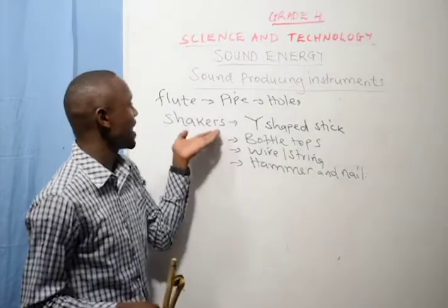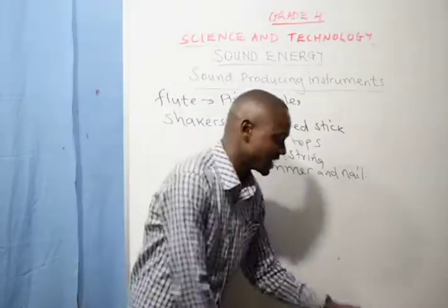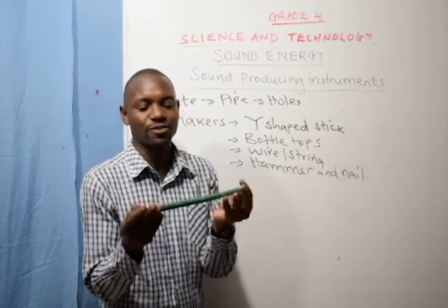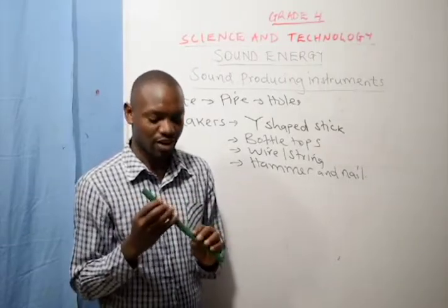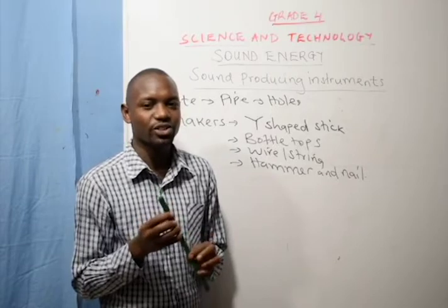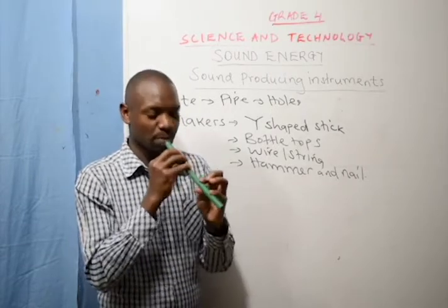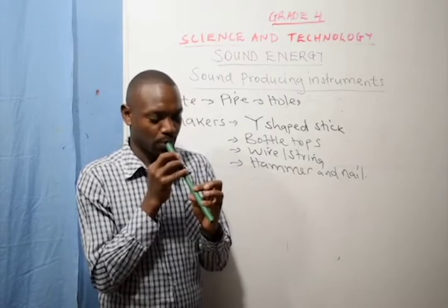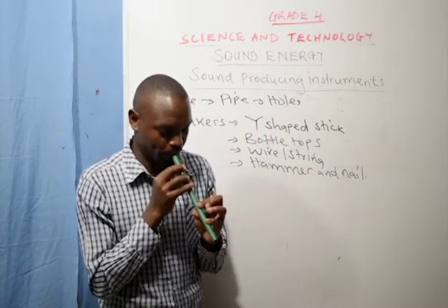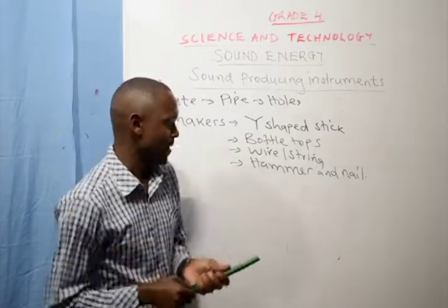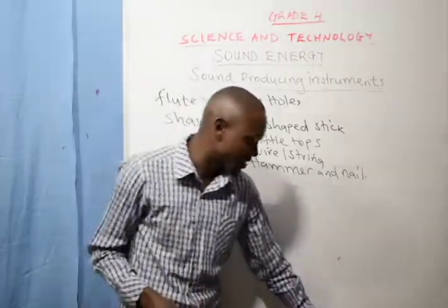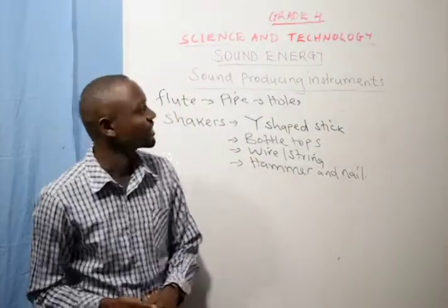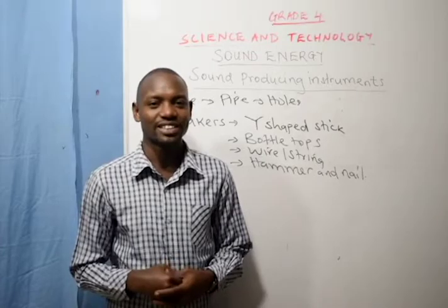So try to make a flute and shakers. For a flute, you just need a pipe — make holes on the pipe, block the holes using your fingers, close the holes, then blow air into the pipe, and you have your flute. Try to make those instruments using local and available materials. Otherwise, I wish you a nice time. Thank you.